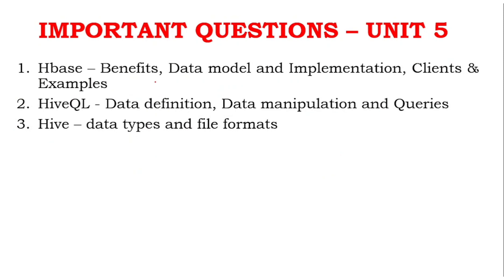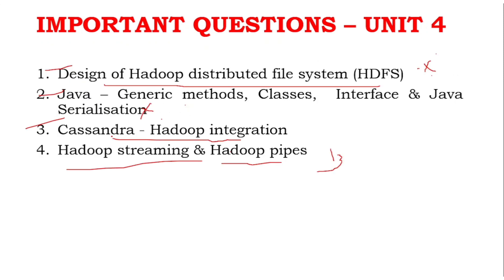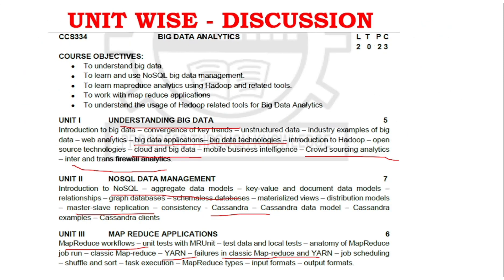For Unit 5, you can find HBase, HBase QL, and HBase topics - these will be key questions. For Part A, in Unit 1 consider Introduction to Hadoop and open source technologies - two confirmed questions. For Unit 2, document models, consistency, Cassandra clients - two Part A questions confirmed. For Unit 3, anatomy of MapReduce, input and output formats, task execution, shuffle and sort are important Part A areas.